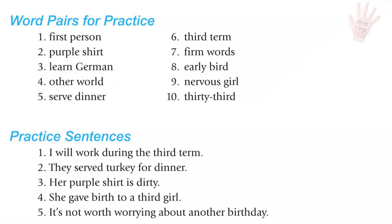Word pairs for UR: first person, purple shirt, learn German, other world, serve dinner, third term, firm words, early bird, nervous girl, thirty-third.